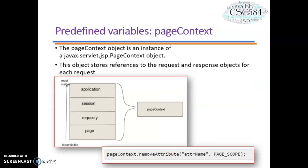Let's look at the last predefined variable, PageContext. The PageContext object is an instance of javax.servlet.jsp.PageContext and represents the entire JSP page. This object is intended as a means to access page information while avoiding most implementation details. It stores references to the request and response objects for each request, and the application, config, session, and out objects are derived by accessing attributes of this object. Here is an example using the removeAttribute method supported by the javax.servlet.jsp.PageContext interface.